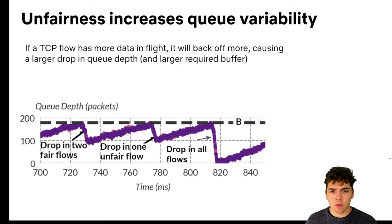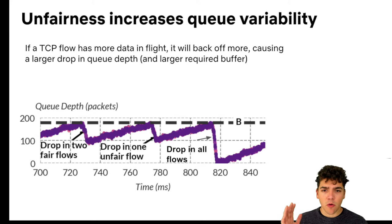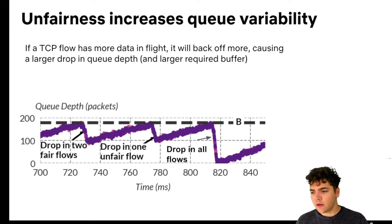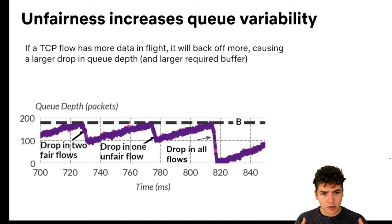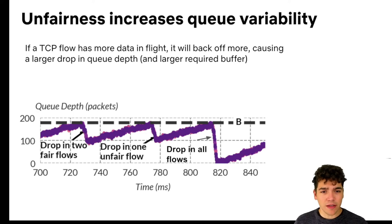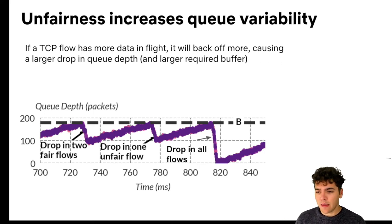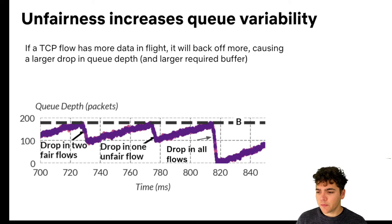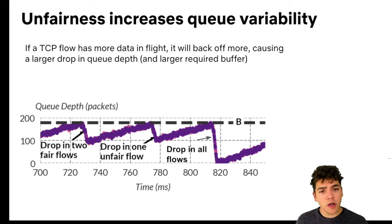Here's an example from experiments we ran. On the x-axis is time, on the y-axis is q-depth, for four TCP Reno flows sharing a link. We see a dropping q-depth caused by two flows both seeing a loss at the same time and dropping their windows. Then another drop of about the same decrease, this time caused by one flow with a really big window decreasing it. Finally a drop twice as large, caused by all flows simultaneously decreasing their windows. The point is that one flow with a really big window causes higher queuing variability and a higher required buffer size.